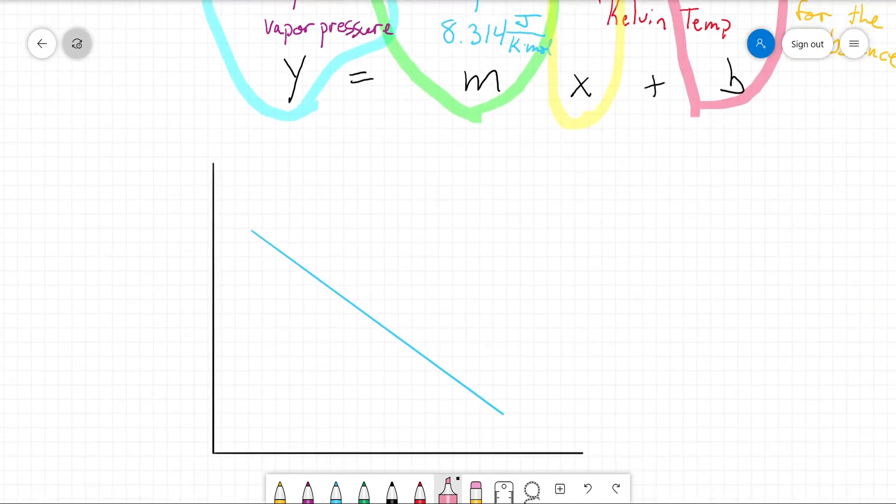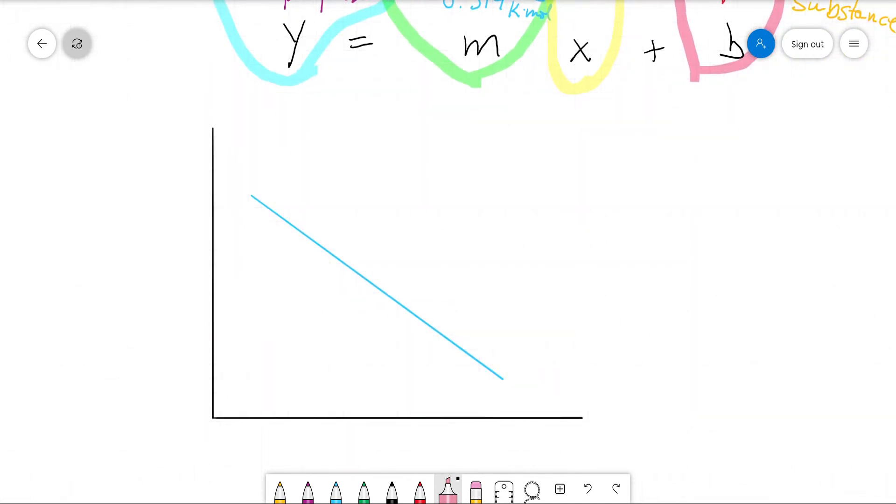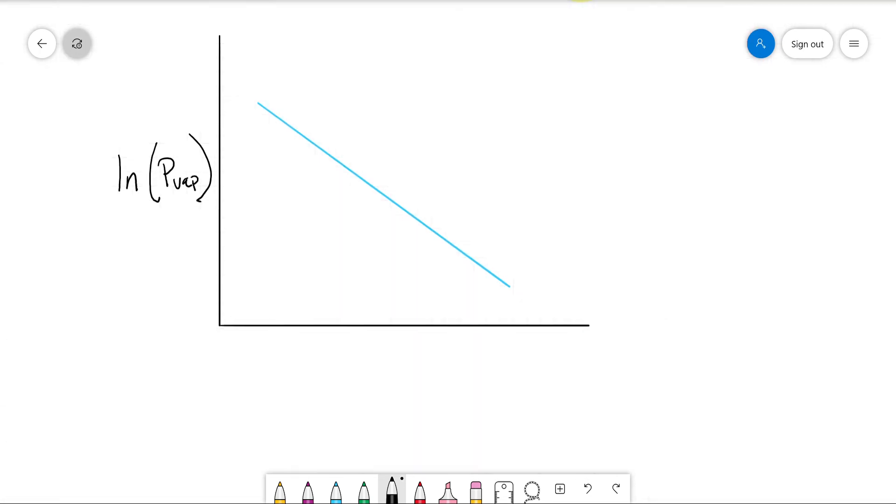Okay. So if we make a plot of natural log of the vapor pressure versus 1 over T in Kelvin, we'll get a straight line out of this, with a negative slope.